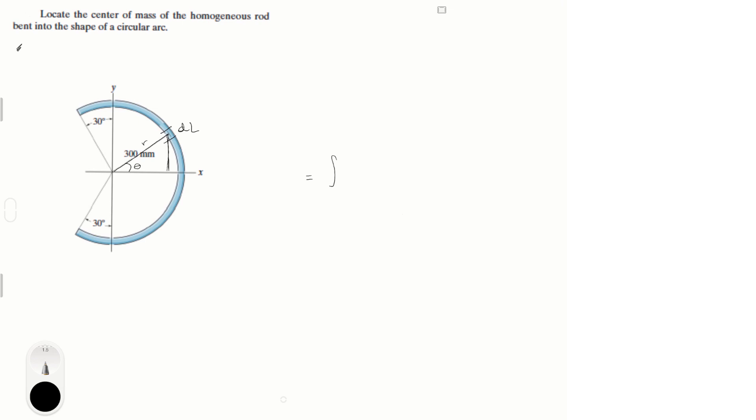So the integral is 0.09 cosine of theta d theta. This is equal to 0.09 sine of theta from minus 2 pi over 3 to 2 pi over 3. When you solve this, you get that this is equal to 0.0779 plus 0.0779 all over 0.628 plus 0.628.